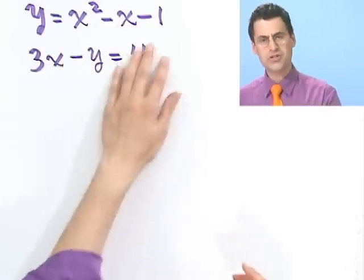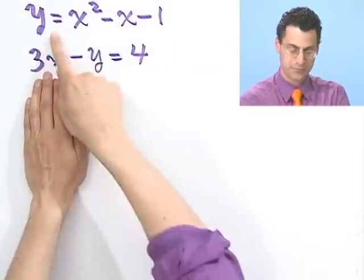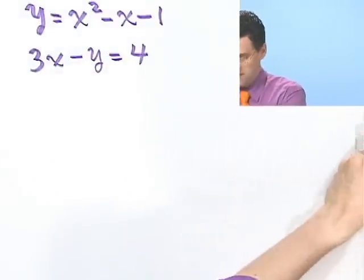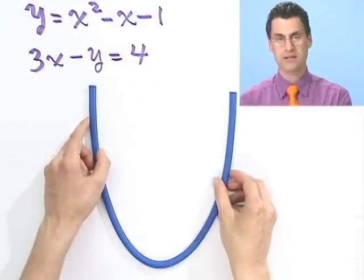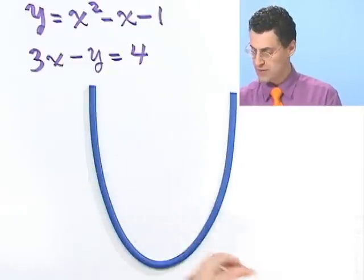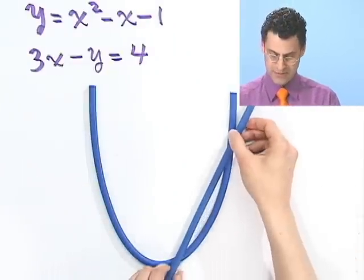Now what would this look like? Well, I mean visually you should have an image in your mind. A parabola, and it's a happy face parabola, should look somehow like this. This is a line, so somehow it may intersect in some sort of fashion like this.